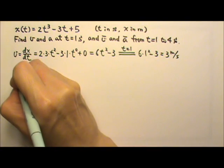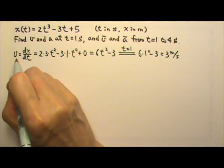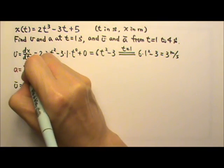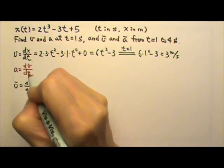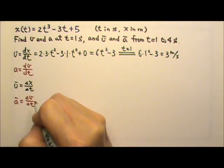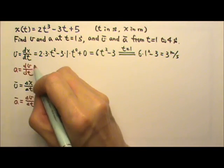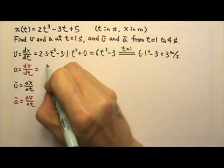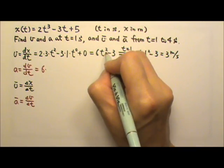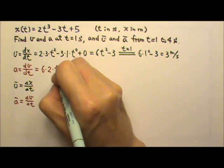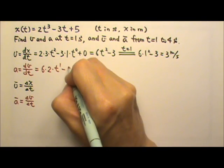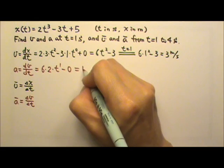For the acceleration, we take the derivative of the velocity, which means we take one more derivative — dv/dt — because the definition of average acceleration is delta v over delta t, so the instantaneous acceleration is dv/dt. Taking the derivative: 6 times we bring down the exponent and lose one degree of power, and the derivative of the constant is 0, giving us 12t.